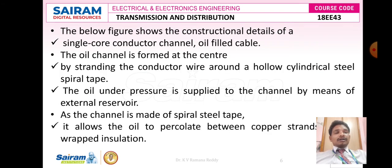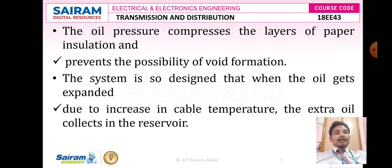In the single core conductor channel, the channel is filled with oil. The oil channel is formed at the center of the core by stranding the conductor wire around a hollow cylindrical steel in a spiral type. The oil is under pressure, which is supplied to the channel by means of an external reservoir. As the channel is made up of spiral steel tape, it allows the oil to percolate between the copper strands and the wrapped paper insulation and the lead sheath. Therefore, the oil pressure compresses the layers of paper insulation and prevents the possibility of void formation.